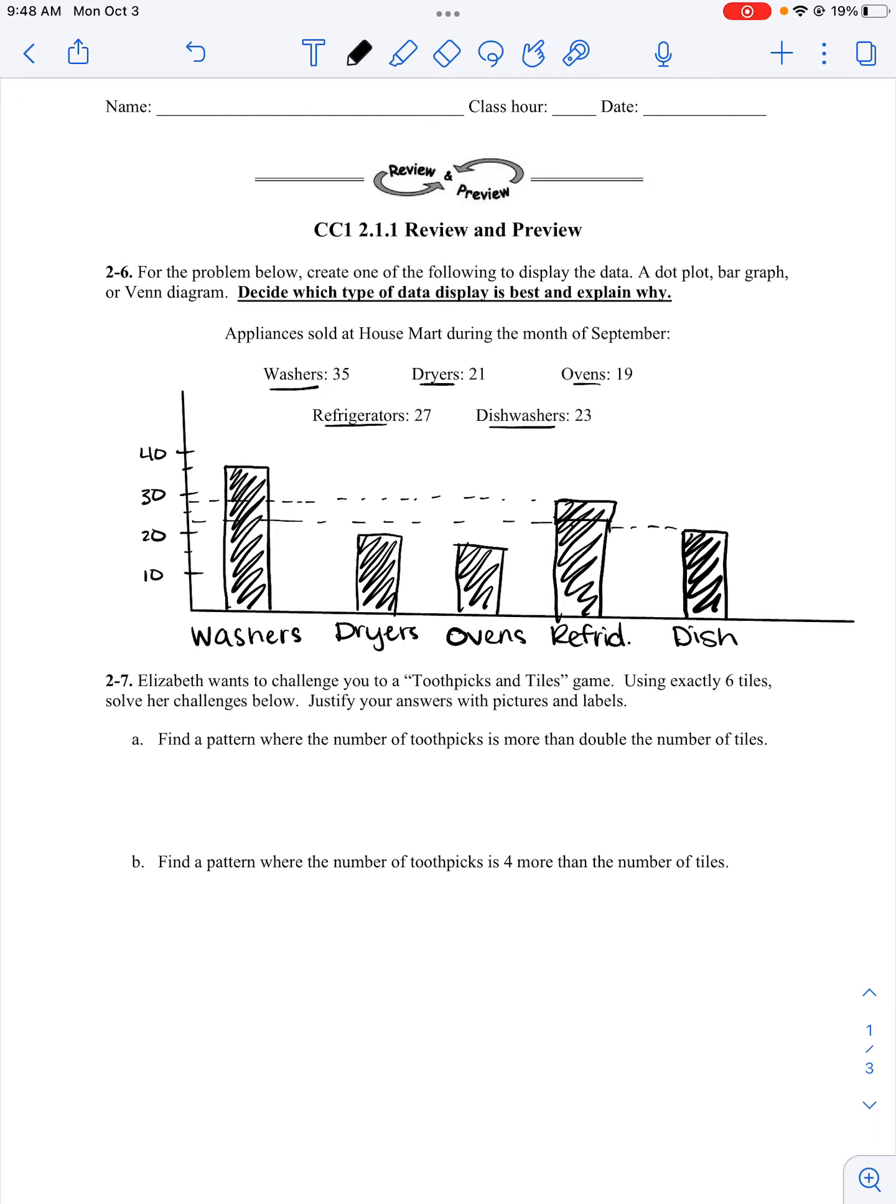Okay. So for my explanation, a bar graph because my data is categorical and there is no overlapping information or data. My data does not overlap.